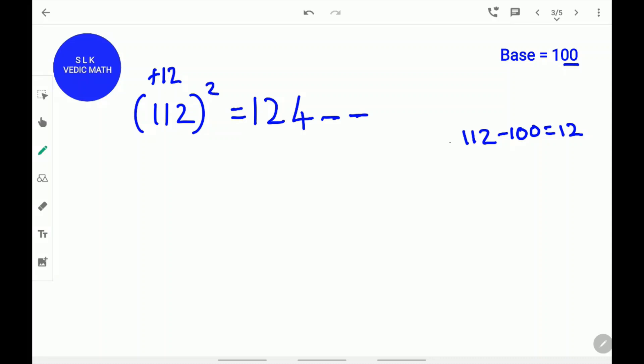Next, square this difference 12. 12 square is 144. Since there are only supposed to be two digits, since there are two zeros in 100, write the 1 on top of the 4 and write the remaining 44 over here.